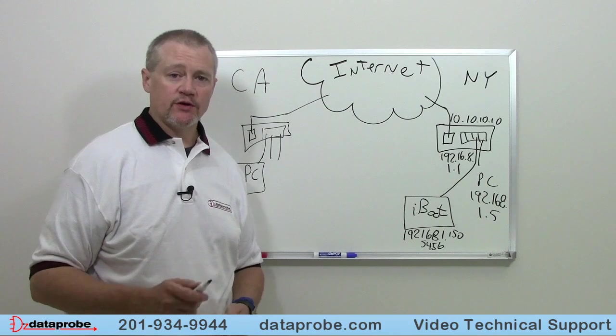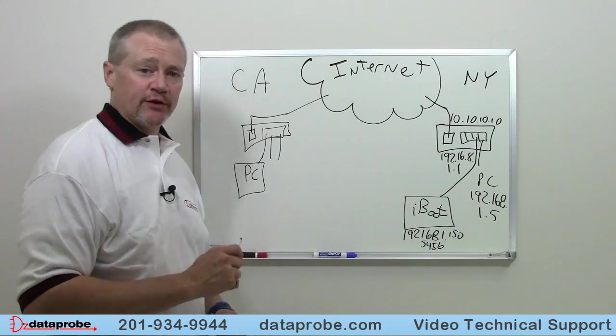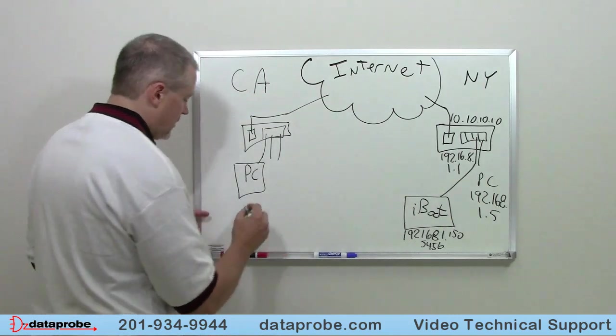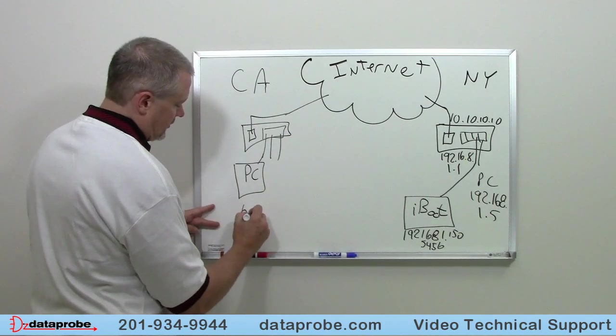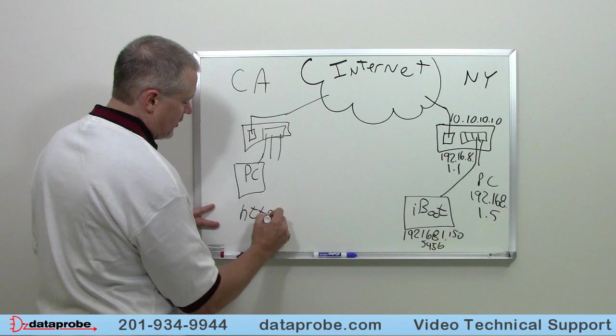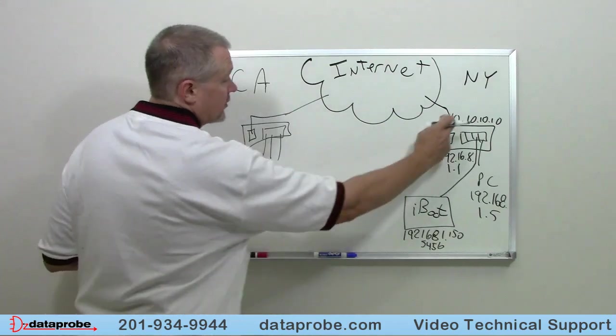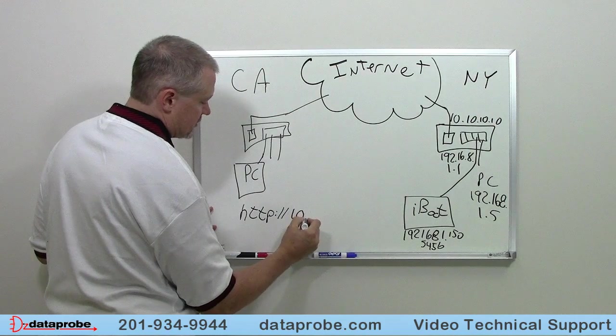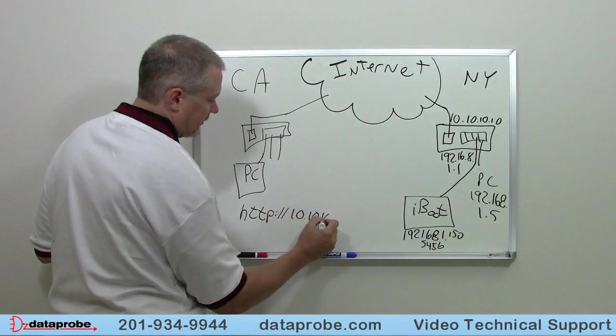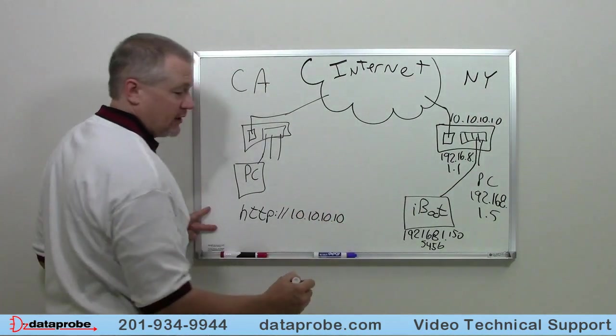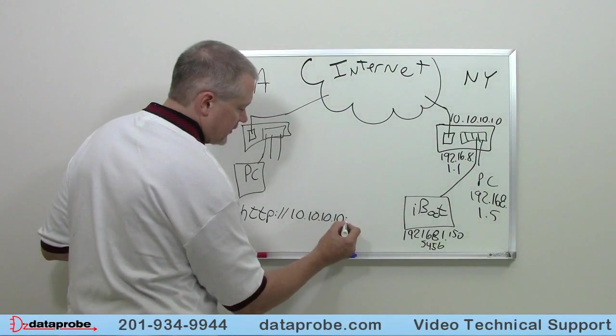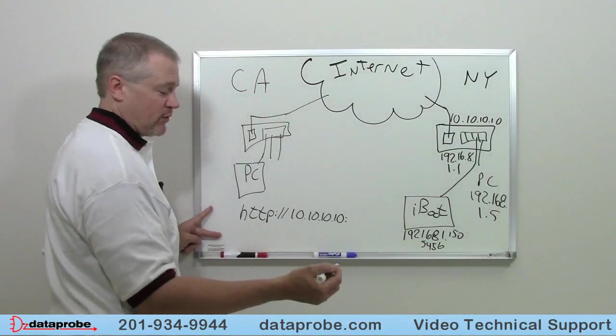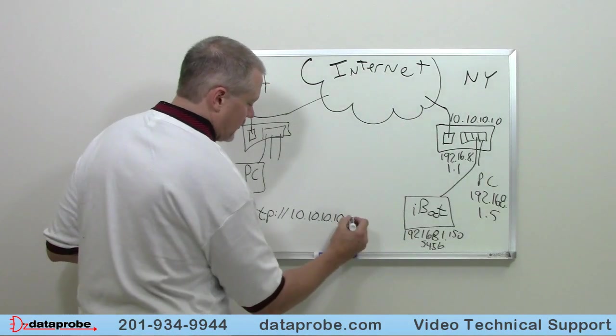Now that we have set up port forwarding in New York, let's go to California and access our device. In our web browser on our PC in California we would type in the address, http colon slash slash, the public IP for New York which in this case is 10.10.10.10 and because we have a non-standard web port we are going to put a colon after the 10 and specify the port that we programmed which is 5456.